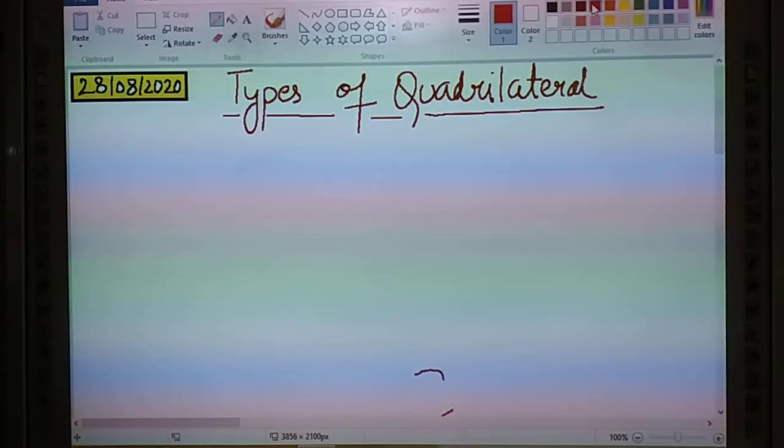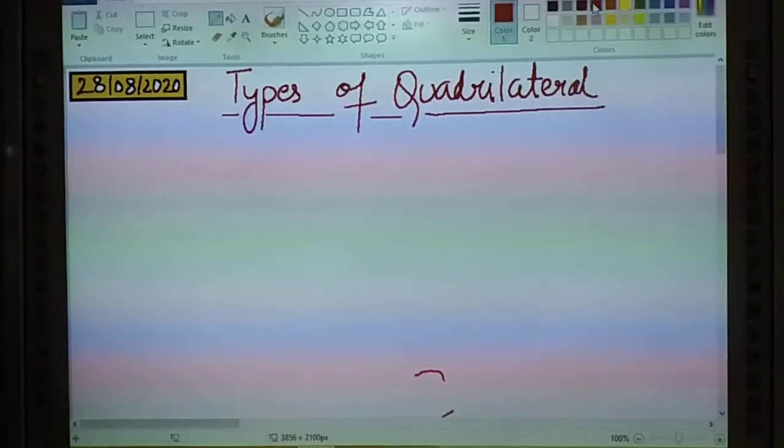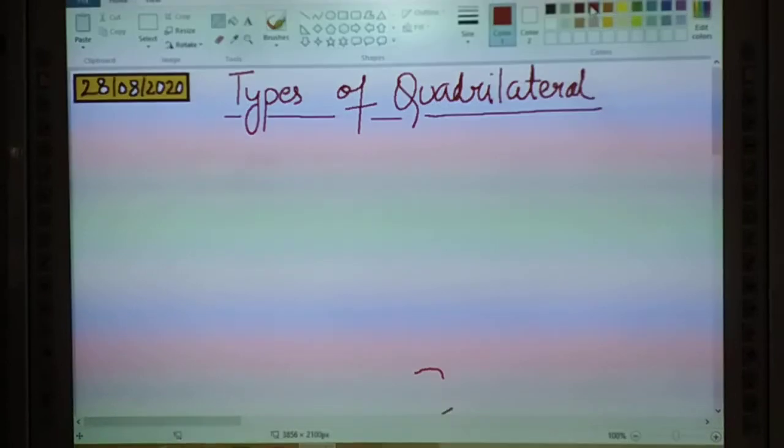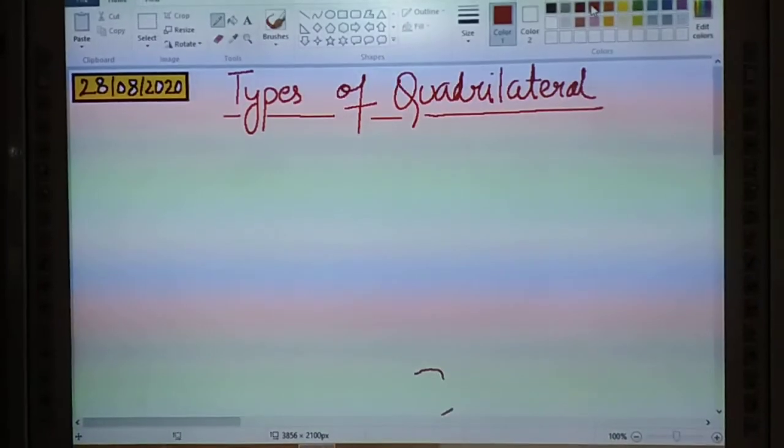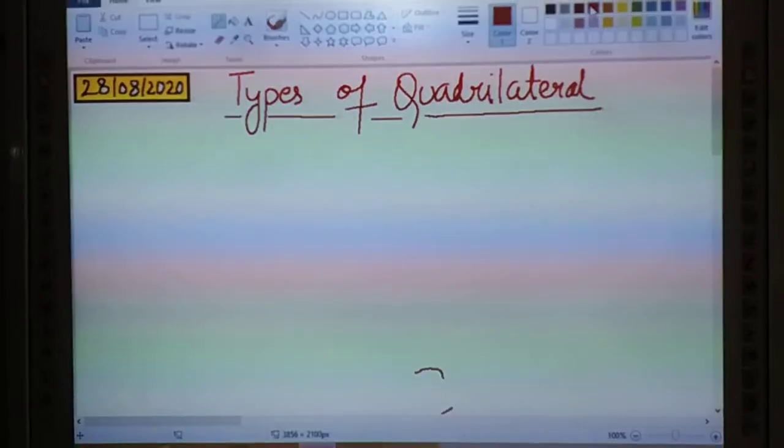The word quadrilateral means a polygon which is made up of four sides. The word quad means four and lateral means side. So a polygon which is made up of four sides, that polygon is known as quadrilateral.